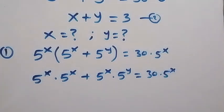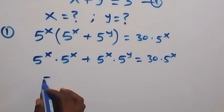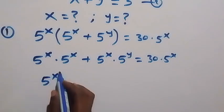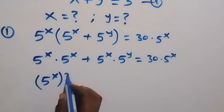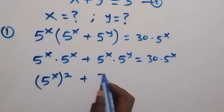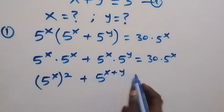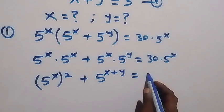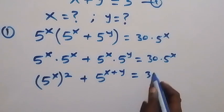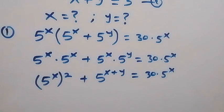5 raised to power x times 5 raised to power x can be written as 5 raised to power x, all squared. And 5^x times 5^y can be written as 5 raised to power x plus y. So we have 5^(2x) plus 5^(x+y) equals 30 times 5^x.